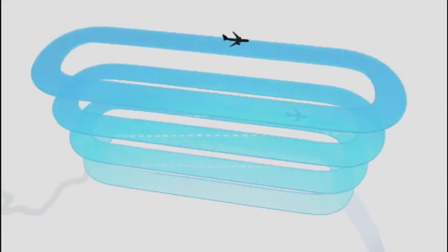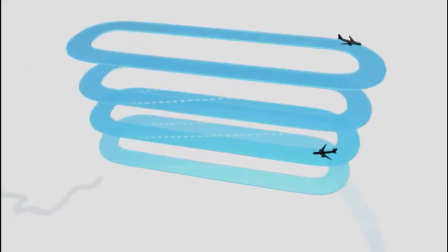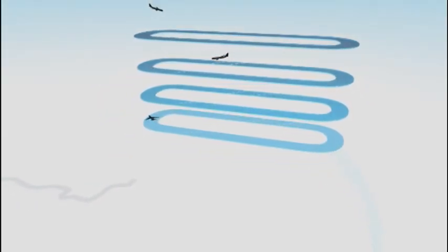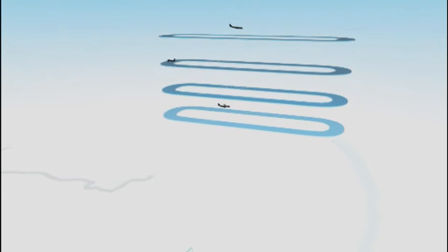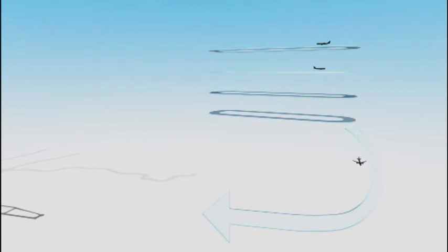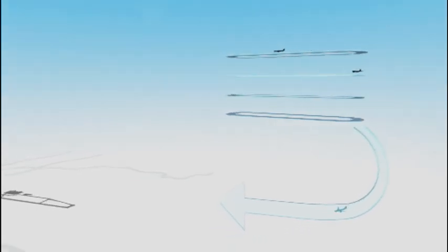For inbound flights, controllers ensure aircraft descend in a safe and orderly stream. At busy times, aircraft are directed to holds, where they circle 1,000 feet apart, down to a level of around 7,000 feet, before being sequenced and released for final approach.